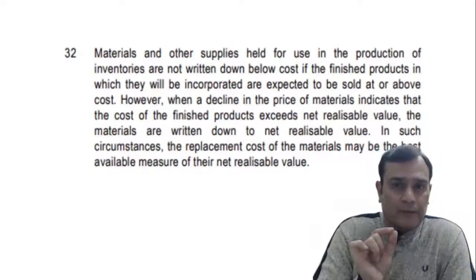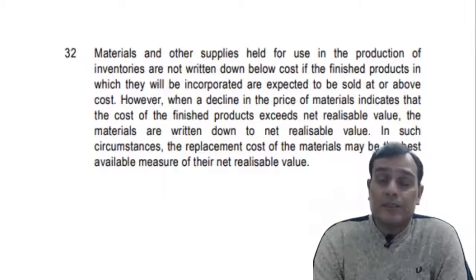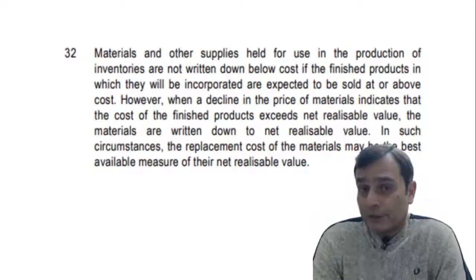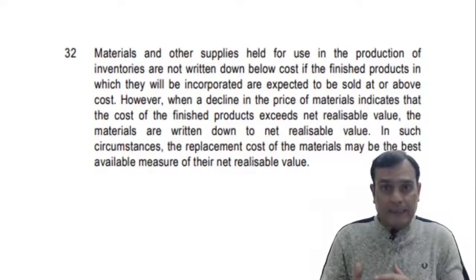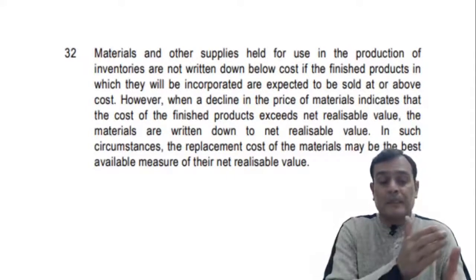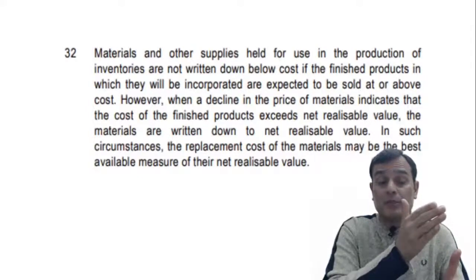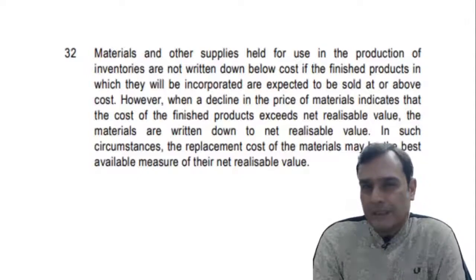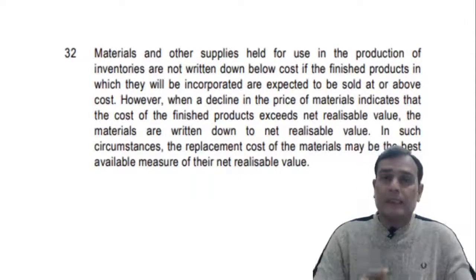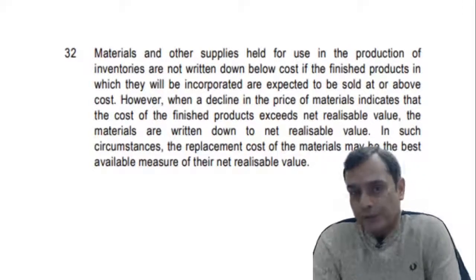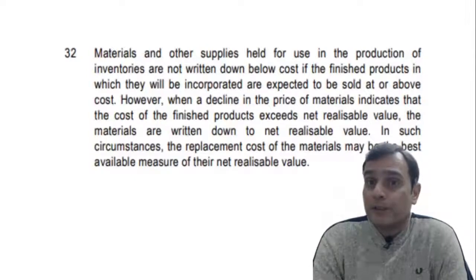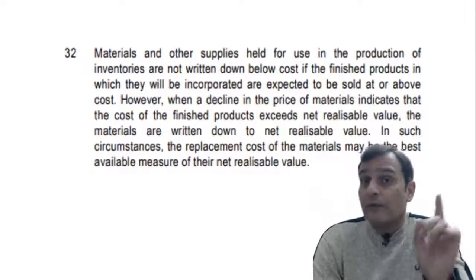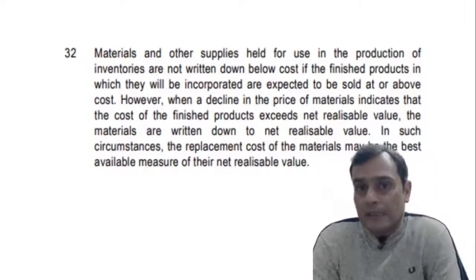So in nutshell: if your finished goods is measured at NRV, the raw material is supposed to be measured at cost or replacement cost whichever is less. Collectively looking at Para 9 and Para 32, we can say Para 9 applies to finished goods and WIP — measured at cost or NRV whichever is less. But when it comes to raw material, the valuation depends upon the valuation of finished goods: if FG is at cost, RM is at cost; if FG is at NRV, RM is measured at cost or replacement cost whichever is less.